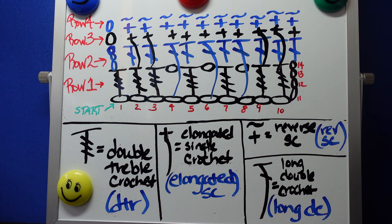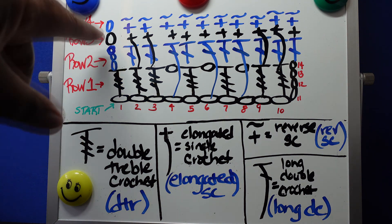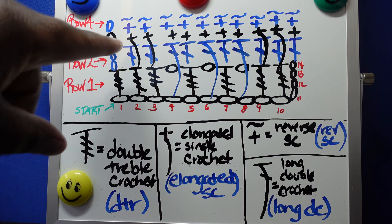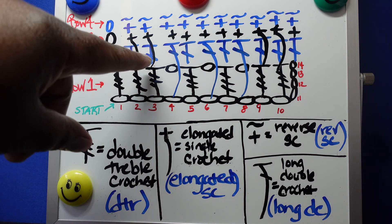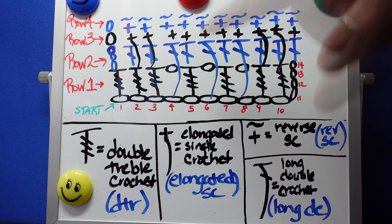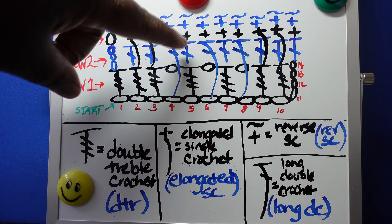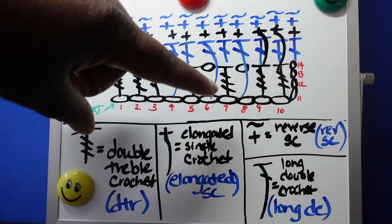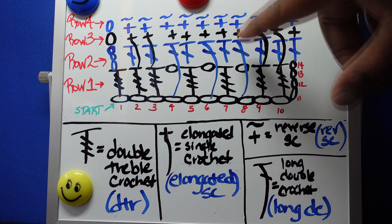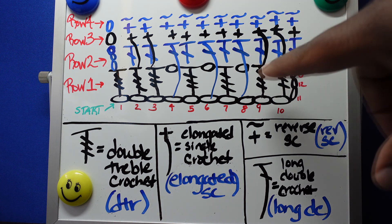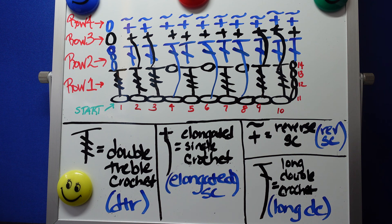Row two is shown in blue, indicating we're looking at the back side. We chain three because we're using double crochet for this row. Then the next two stitches get a double crochet each. The next stitch gets a long double crochet that extends all the way down to the chain row below. Then a regular double crochet, another long double crochet down to the sixth chain, a double crochet, another long double crochet, and we finish the three remaining stitches with just double crochets.